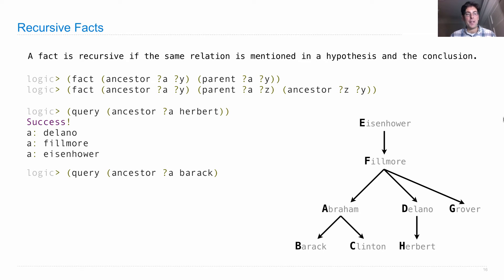And likewise, I could ask, who are the ancestors of Barack and Herbert at the same time? So this is a compound query. Both of these must be satisfied simultaneously with the same assignment to A. So think about that for a second. The answer is all the common ancestors between Barack and Herbert, which is Fillmore and Eisenhower.